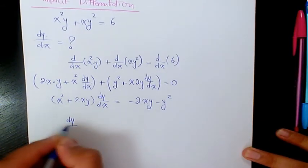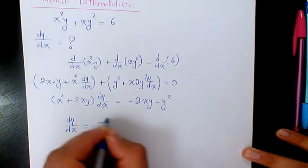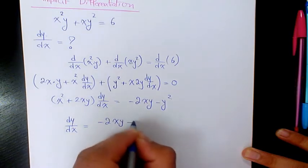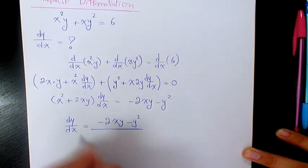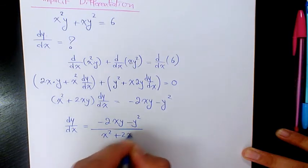So we have dy over dx equals negative 2xy minus y squared over x squared plus 2xy. So that's going to be the first derivative of this function using implicit differentiation.